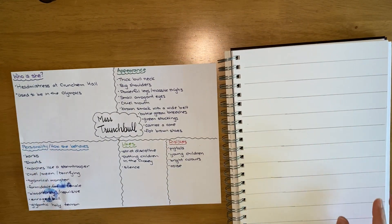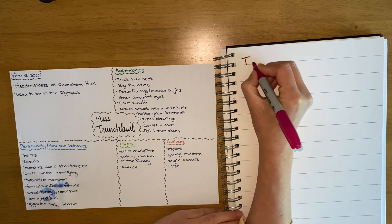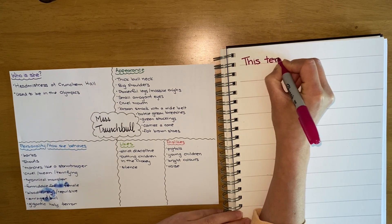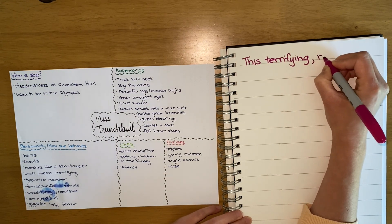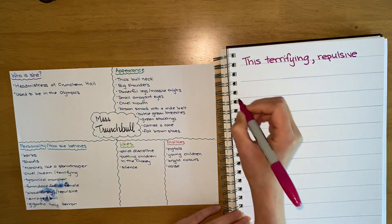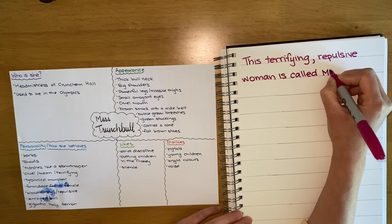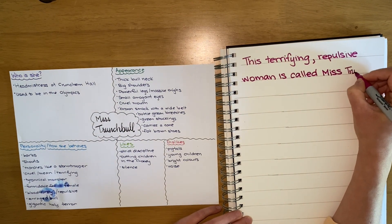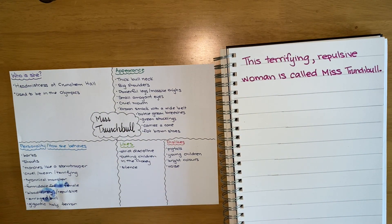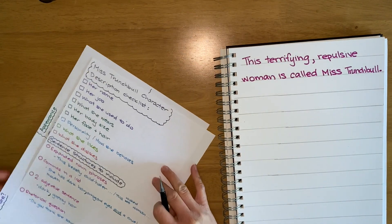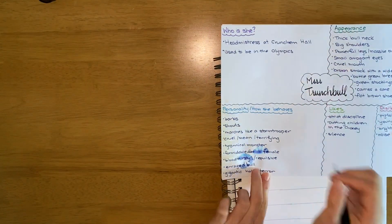The first sentence I want to write is about what her name is, because the person reading this needs to know who she is. I'm going to start off with 'This terrifying, comma, repulsive woman is called Miss Trunchbull.' I'll tick off that I have said what her name is, and on my plan I'm going to tick off that I've used the word 'terrifying'.